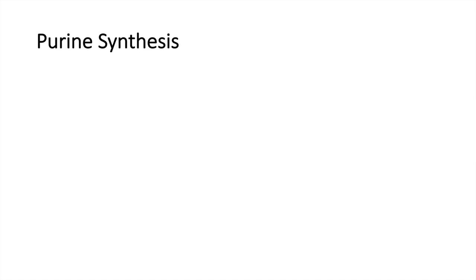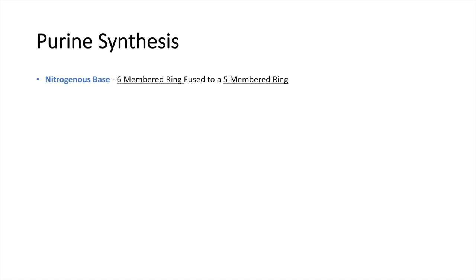So to get started, what are purines? Well, purines, as pyrimidines are, they are nitrogenous bases. They are six-membered rings, but they are fused to a five-membered ring as well. Adenine and guanine are purines.